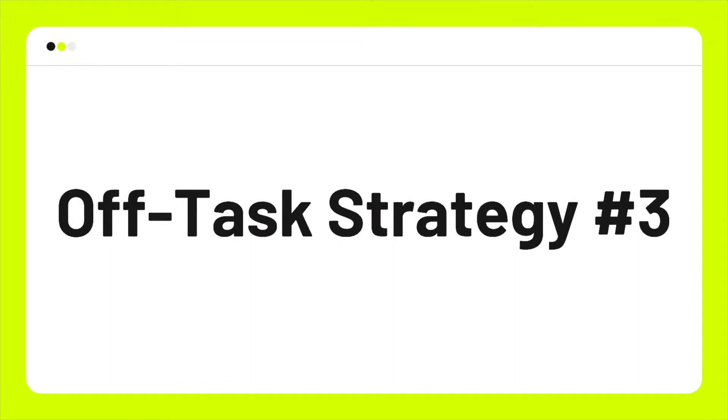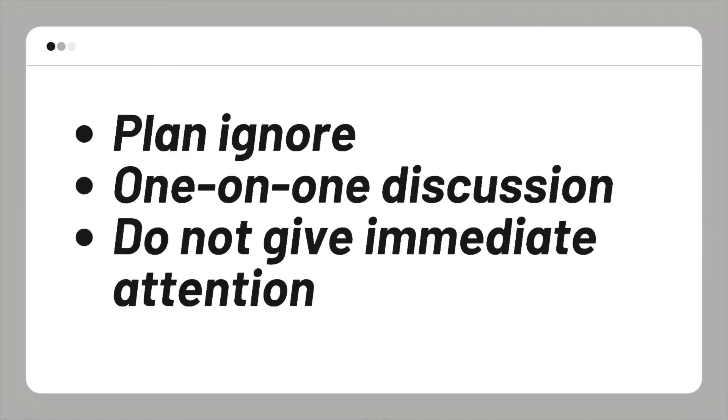The next strategy is ignoring behavior. This is usually for a student who is unfocused and craving attention — tapping their pencil, making noises, looking around the room. You don't want to give them individual attention while directing the whole class. Wait until later, then give them that individual time and say, 'Hey, I noticed you were doing this — what's going on?' Try to figure out what's happening before addressing it publicly.